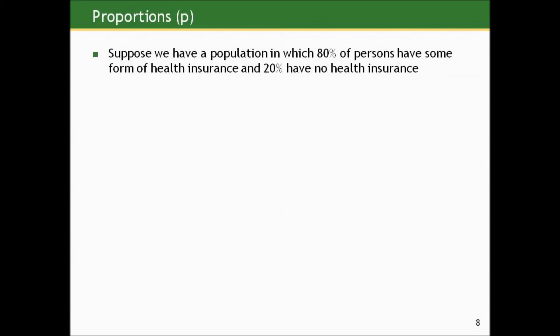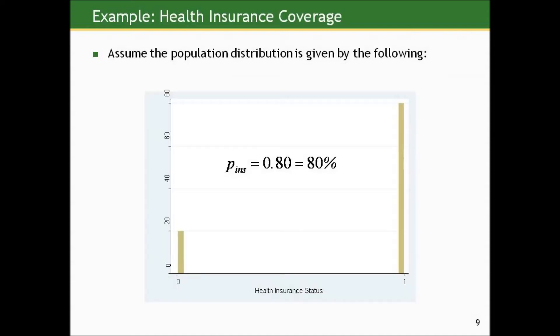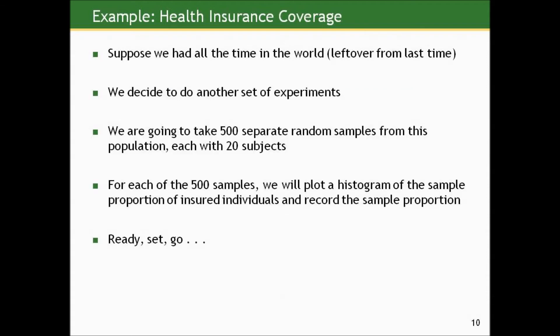Suppose we have a population in which 80% of persons have some form of health insurance and 20% have no health insurance — akin to what we think was going on in Canada. The population distribution has only two possible values coded as 1 for yes and 0 for no. We'll take 500 separate random samples from this population, each with 20 subjects, and for each sample we'll compute and record the sample proportion of insured individuals.